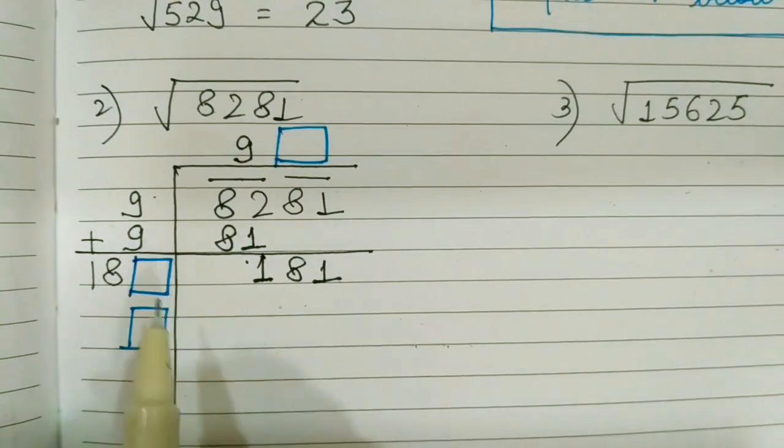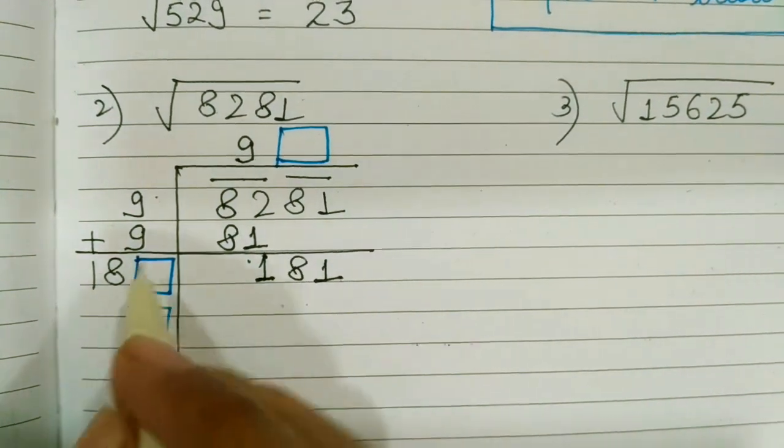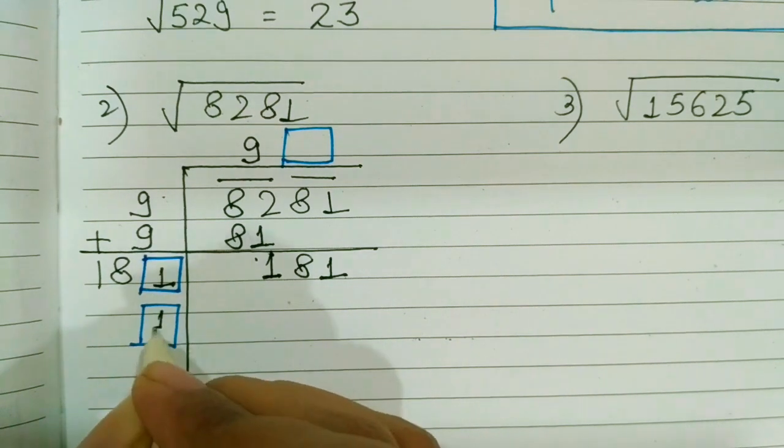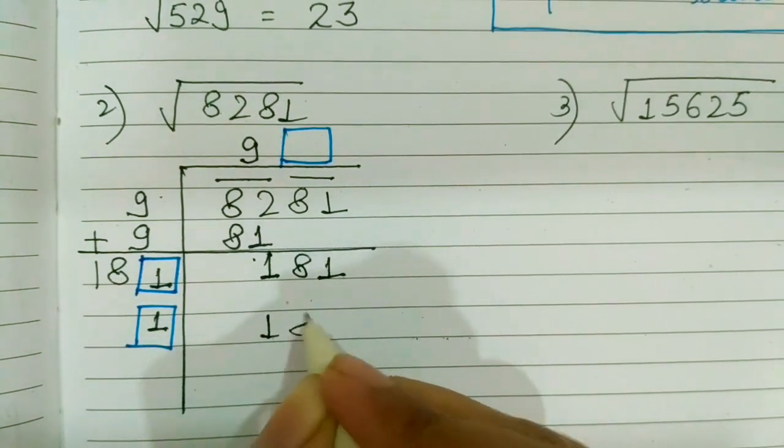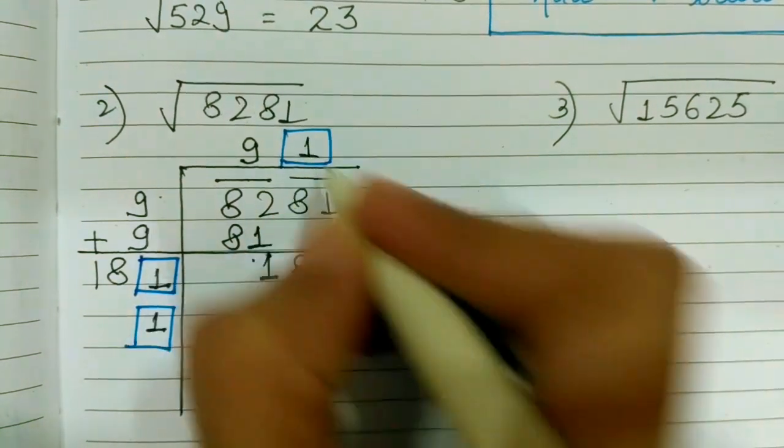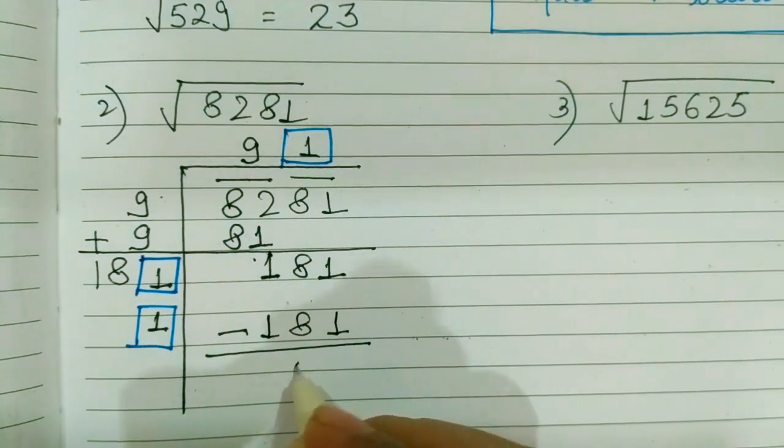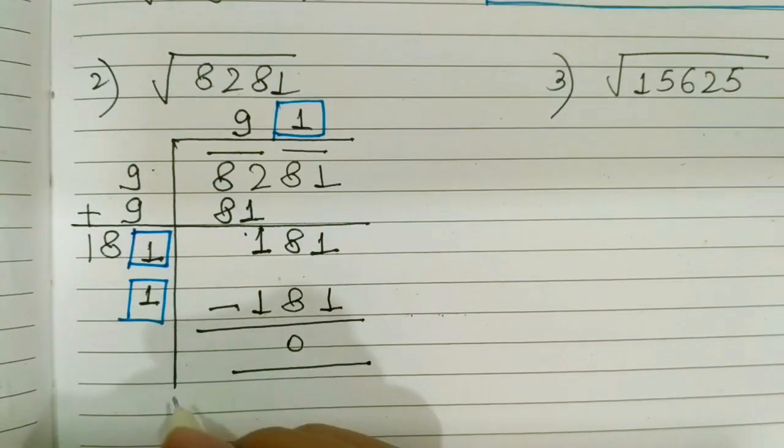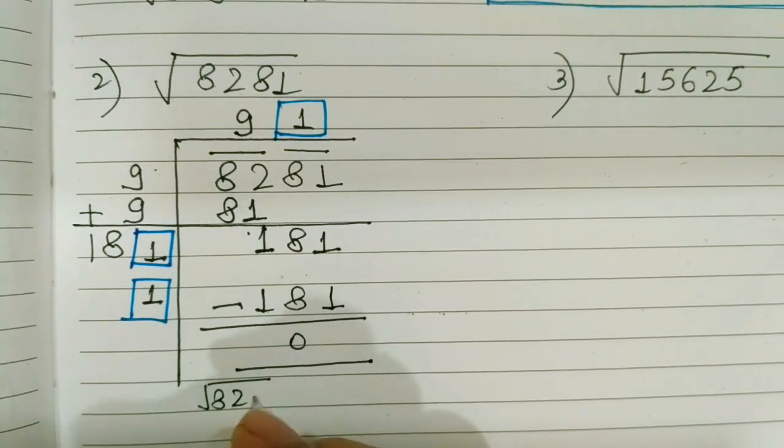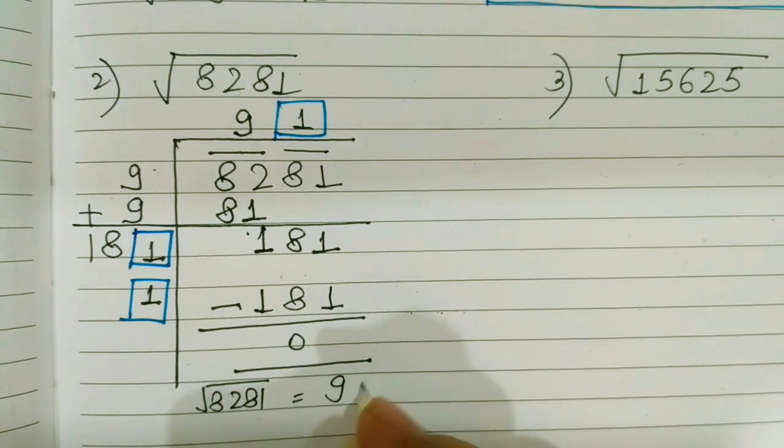Next I have to fill same number in the boxes. If I fill 1 here, 181 into 1 will give me 181. On subtracting I am going to get 0. So under root of 8281 will be equal to 91.